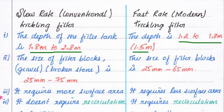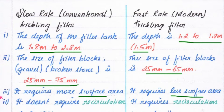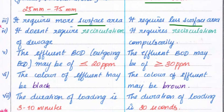The size of filter blocks in the slow rate trickling filter is 25 mm to 75 mm, but in the fast rate it is 25 mm to 65 mm. The slow rate trickling filter requires more surface area, while the fast rate trickling filter requires very less surface area.